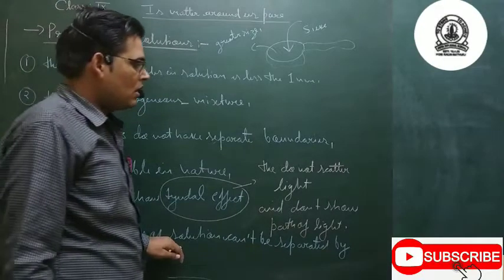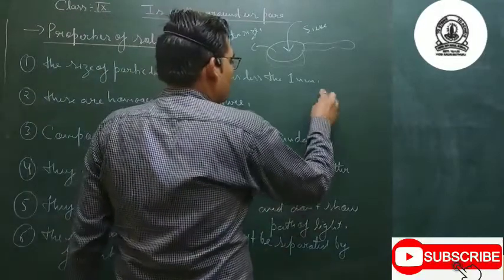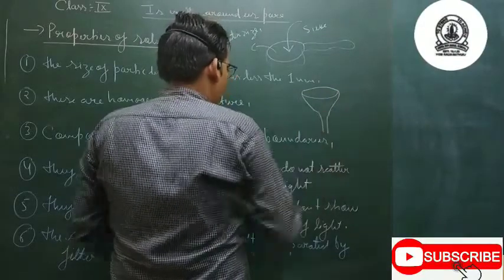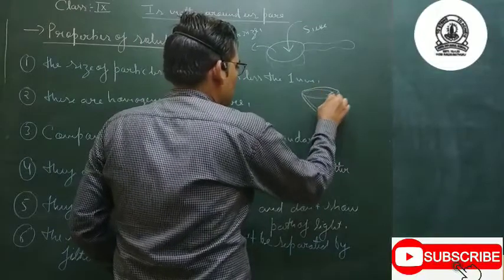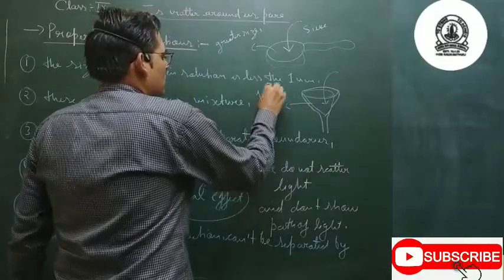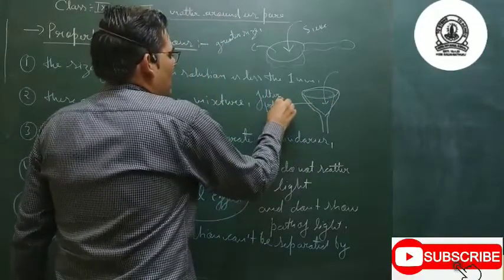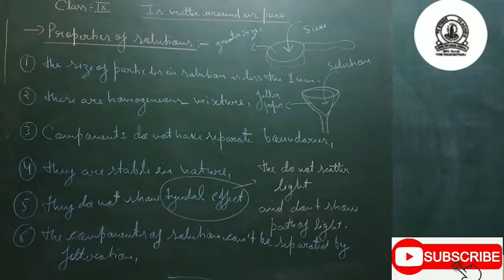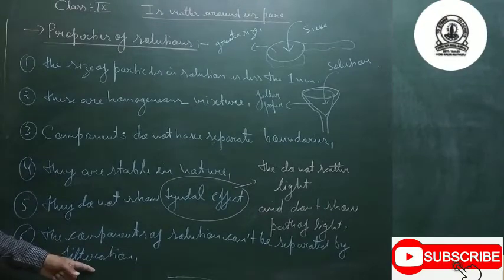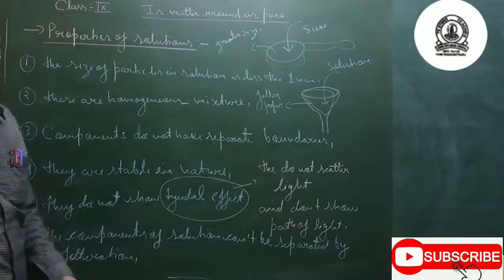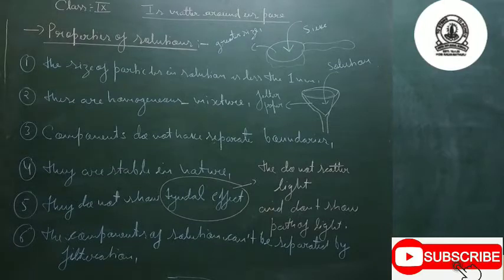If we filter a solution using filter paper placed in a funnel, all the components will pass through the filter paper. So we cannot separate the components of a solution by filtration, because the particle size is less than 1 nanometer and can pass through filter paper.